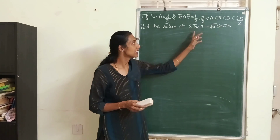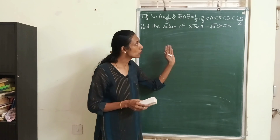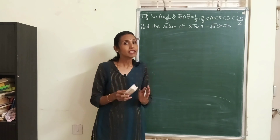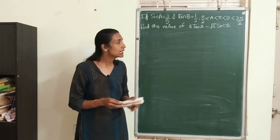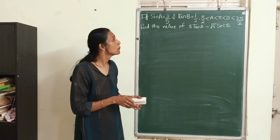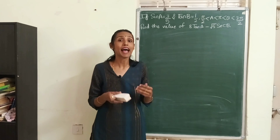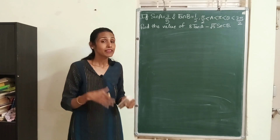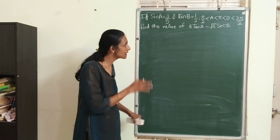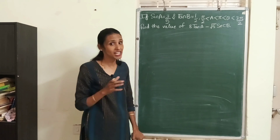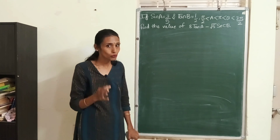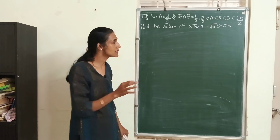So in the earlier grades you have definitely learned how to find the value of these expressions when the angles were all acute angles. Today we will see that if those angles are more than 90 degrees, how you can still find the value of such expressions. Since both angle A and angle B are more than 90 degrees, let's first draw the coordinate plane.